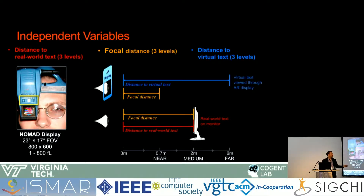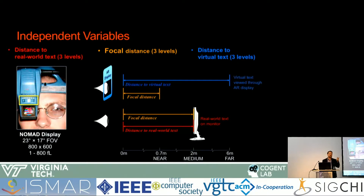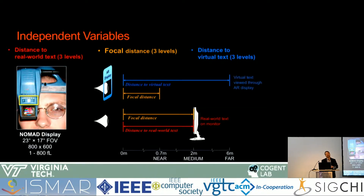The text on the monitor affords a different set of depth cues. There are at least four main depth cues associated with perceiving the monitor text in the real world: binocular disparity from viewing in stereo, vergence driven by that disparity, motion parallax since participants weren't locked into a fixed position, and size. In the virtual text condition with the monocular display, the only primary depth cues available were motion parallax, relative size, and accommodative cues.